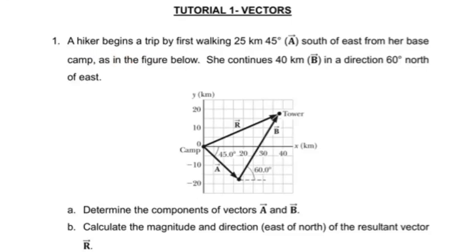I'm going to start here. It says a hiker begins a trip by first walking 25 km at 45 degrees. So I believe with this one it says south of east. Okay, so here it's 45 down there.